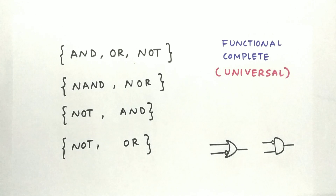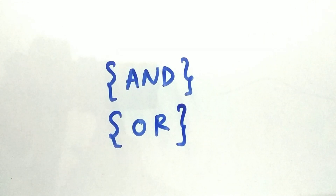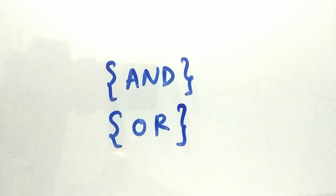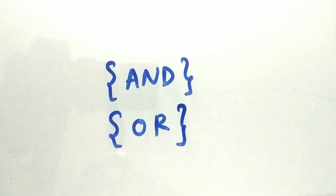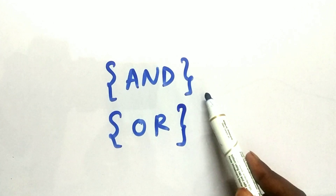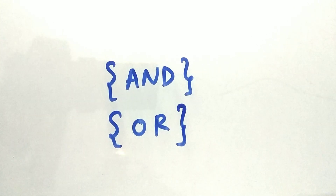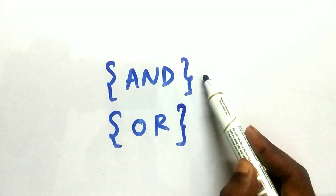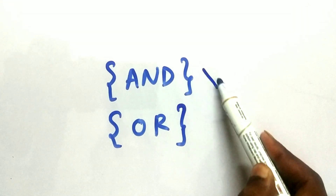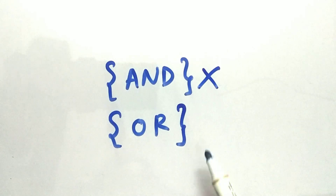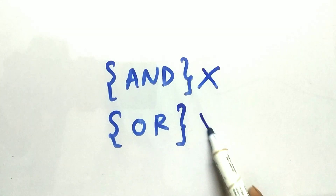Let's take an example of a functionally incomplete set. With the AND gate alone we will not be able to achieve all the boolean operations, so this is not a universal set. Similarly, the other example shown is also not a universal set.